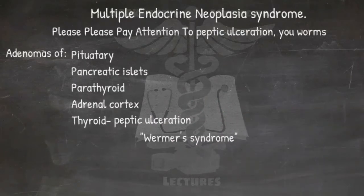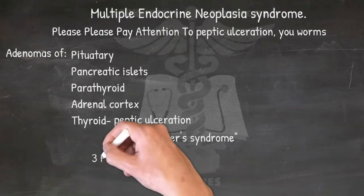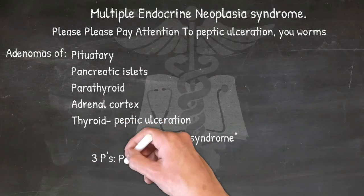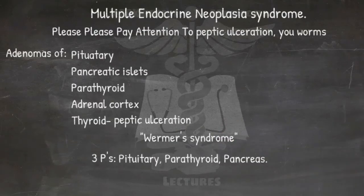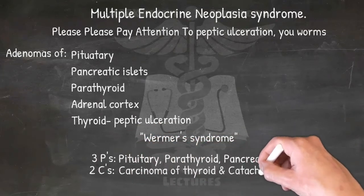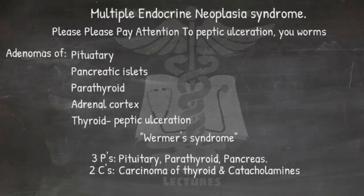Subtype classification of MEN: each subtype has two or three causes plus one or two more items. MEN I is disease of three P's — Pituitary, Parathyroid, Pancreas — plus adrenal cortex. MEN II is disease of two C's — Carcinoma of thyroid, Catecholamines/pheochromocytoma — plus parathyroid or mucocutaneous neuromas.